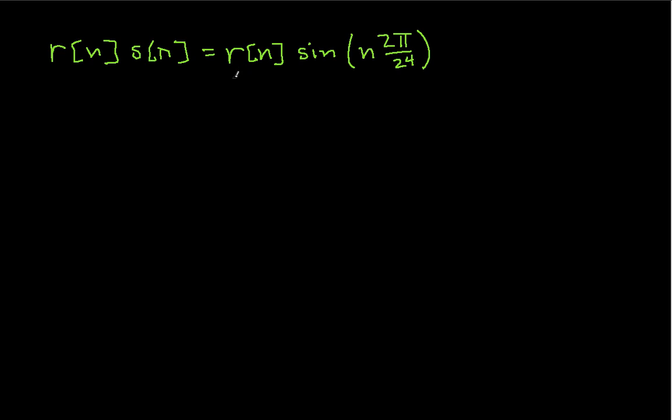Now, using Euler's formula, I can write this as R of n, well, I can write this guy here as 1 over 2j, E to the jn 2 pi over 24, minus 1 over 2j, E to the minus jn 2 pi over 24.